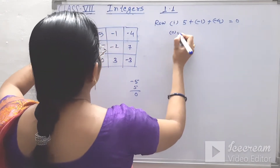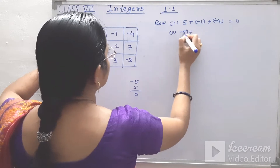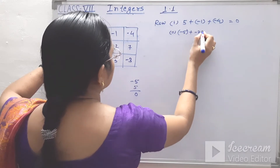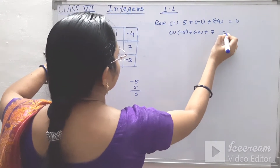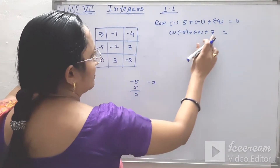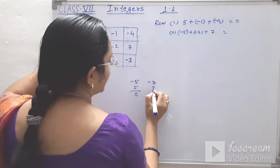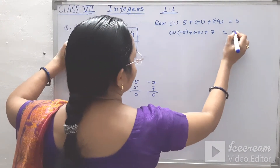In the second row, we see minus 5 plus minus 2 plus 7. Minus 5 and minus 2 gives minus 7. Minus 7 and plus 7, the answer is 0.